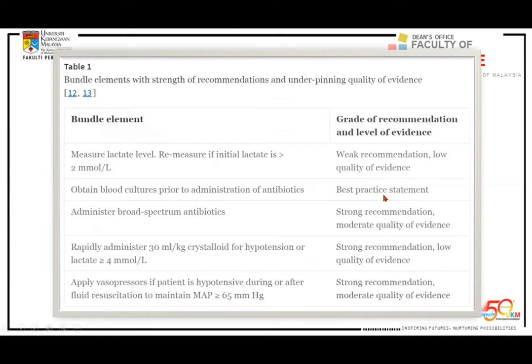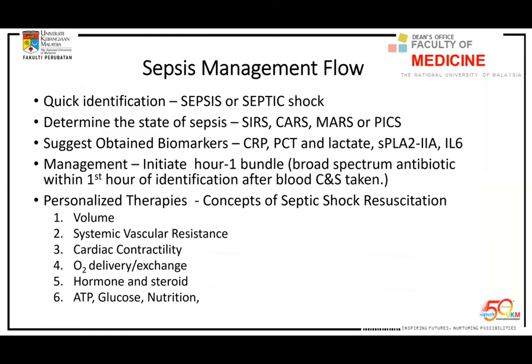Broad-spectrum antibiotics will improve patient survival — antibiotics are very important for bacterial infection. However, for viral or fungal groups, there are no definitive recommendations yet. Rapid crystalloid at 30 mL/kg is for patients with hypotension and lactate more than 4 — a very strong recommendation. Apply vasopressor if BP is lower than 65 after adequate fluid resuscitation — strong recommendation, moderate quality. Now, how do we incorporate all this into a more systematic sepsis management approach?